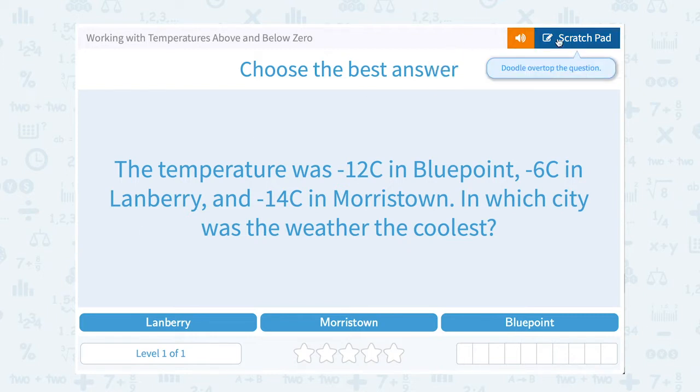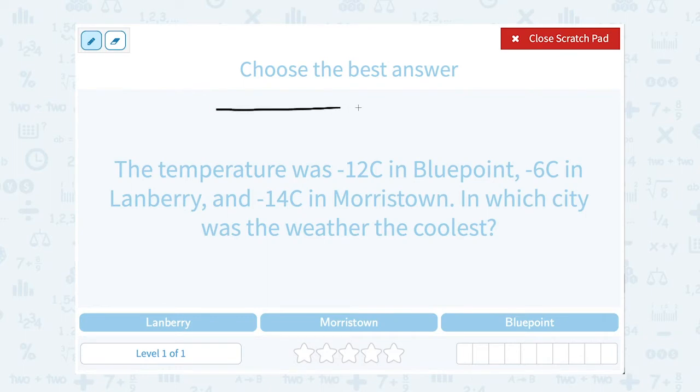You have to be careful when you're working with negative numbers to think about the number line. Because normally if these were positives, if we had positive 12, 6, and 14, then 6 would be the coolest. But they're negative, so that changes things a little bit.